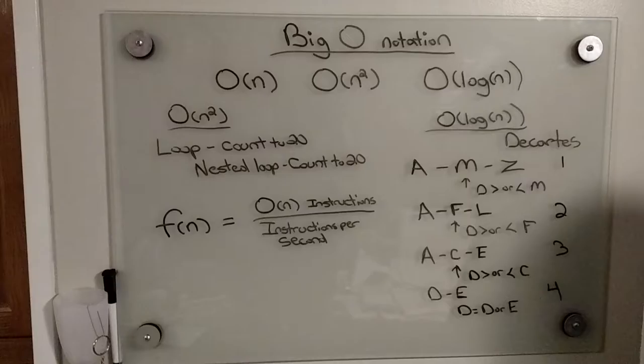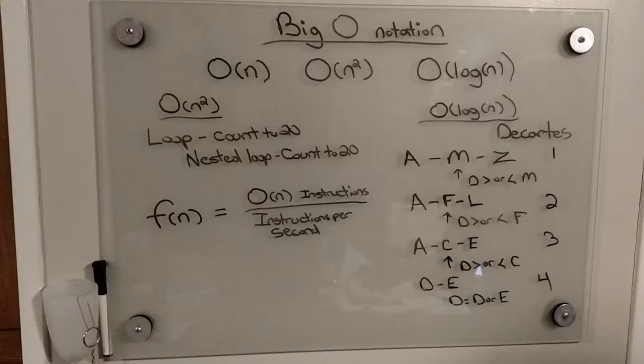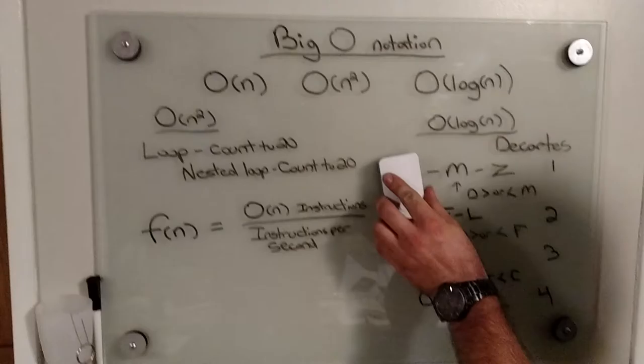We have D and E, which we do a simple comparison. And when we originally started out with 26 possibilities, it only took us four iterations to actually find the book that we were looking for.